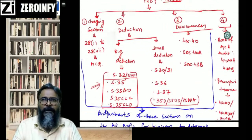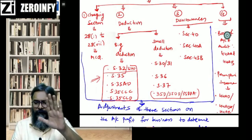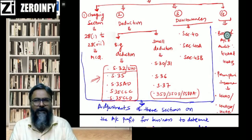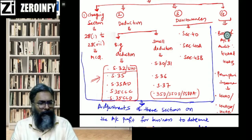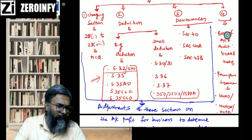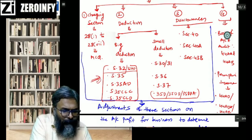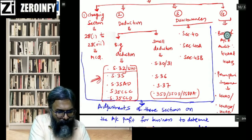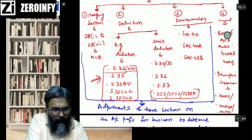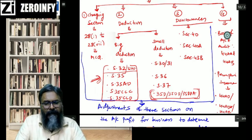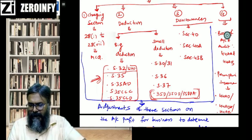Just ensure your chart is comprehensive. For those who just joined: in the big deductions I've added a few sections, and in small deductions the last additions are 35D, 35DD, and 35DDA.